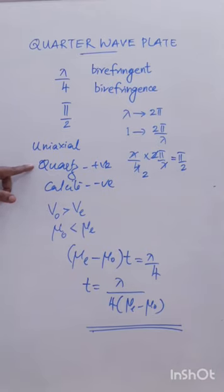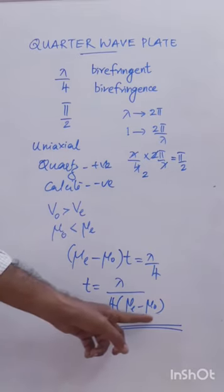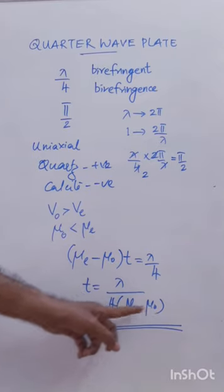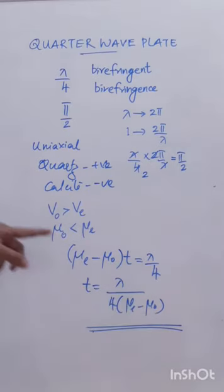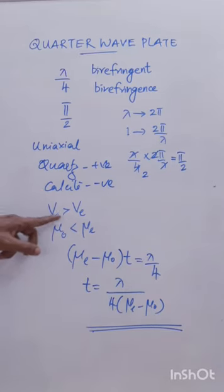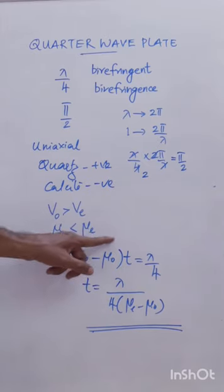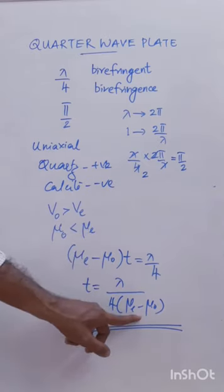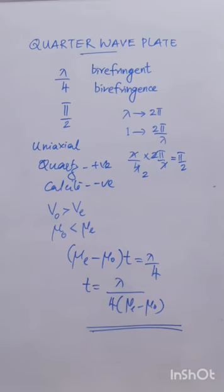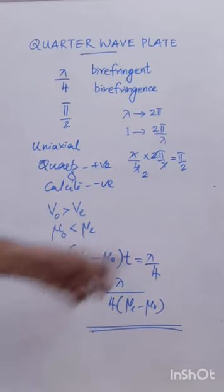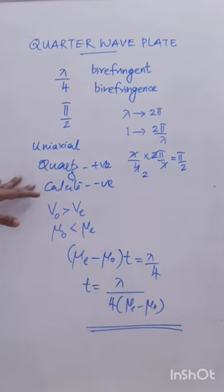If it is a negative quarter wave plate, then (mu_e - mu_o) is replaced by (mu_o - mu_e), because in a negative crystal v_o < v_e and so mu_o > mu_e. So in the denominator, (mu_e - mu_o) is replaced by (mu_o - mu_e) for a negative crystal.